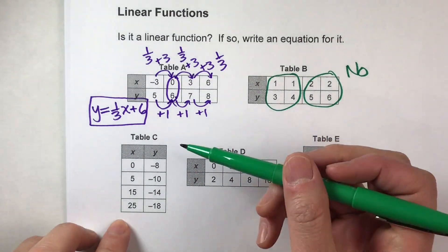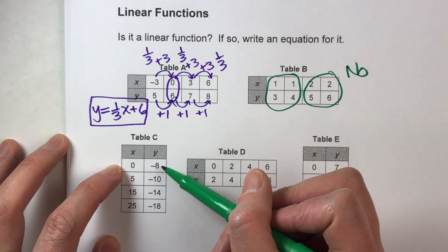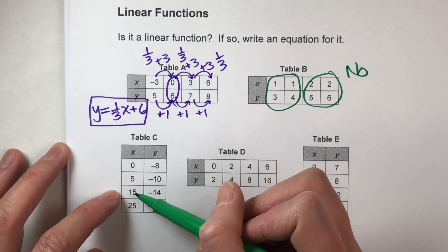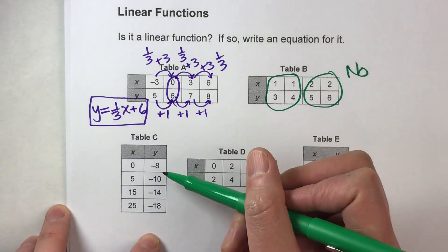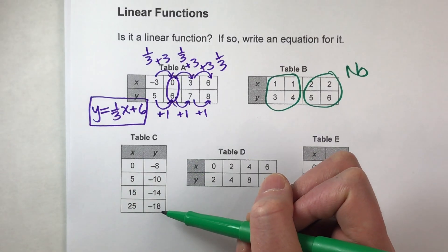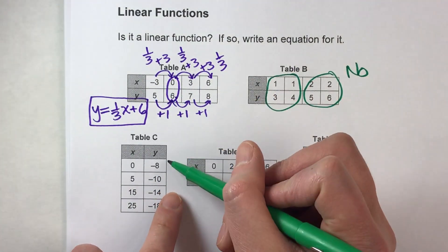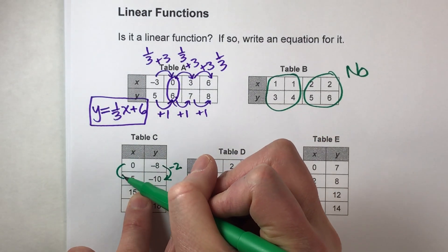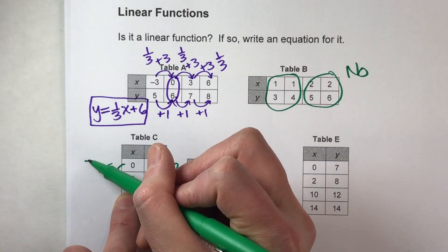Let's do table C. Let's check to see if it's a function. Input of 0 gave us negative 8, input of 5 gave us negative 10, input of 15 gave us negative 14, and input of 25 gave us negative 18. Every single x value gives us only one y value, so it is a function. Now let's check if it's linear. The rise goes down 2 and the run goes from 0 to 5, up 5, so the slope is negative 2 fifths.